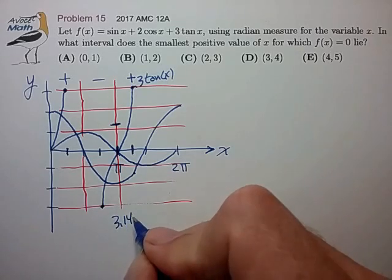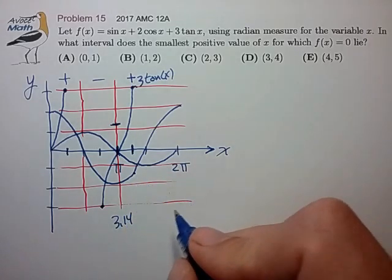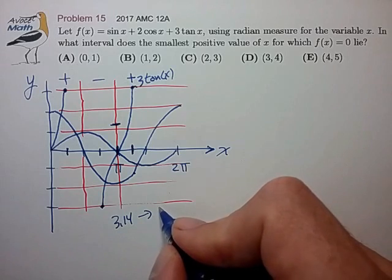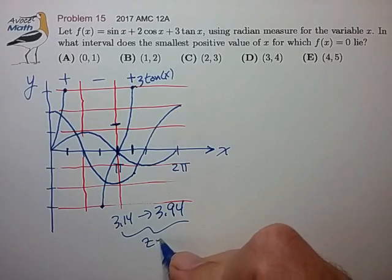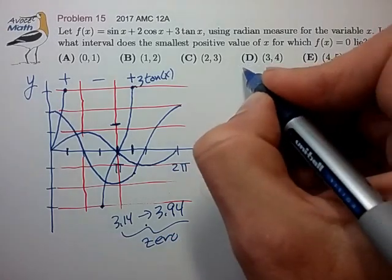So pi is 3.14. Add another 45 degrees to that. That gets you roughly to 3.94. So the zero has to lie somewhere in this interval, and that's choice D.